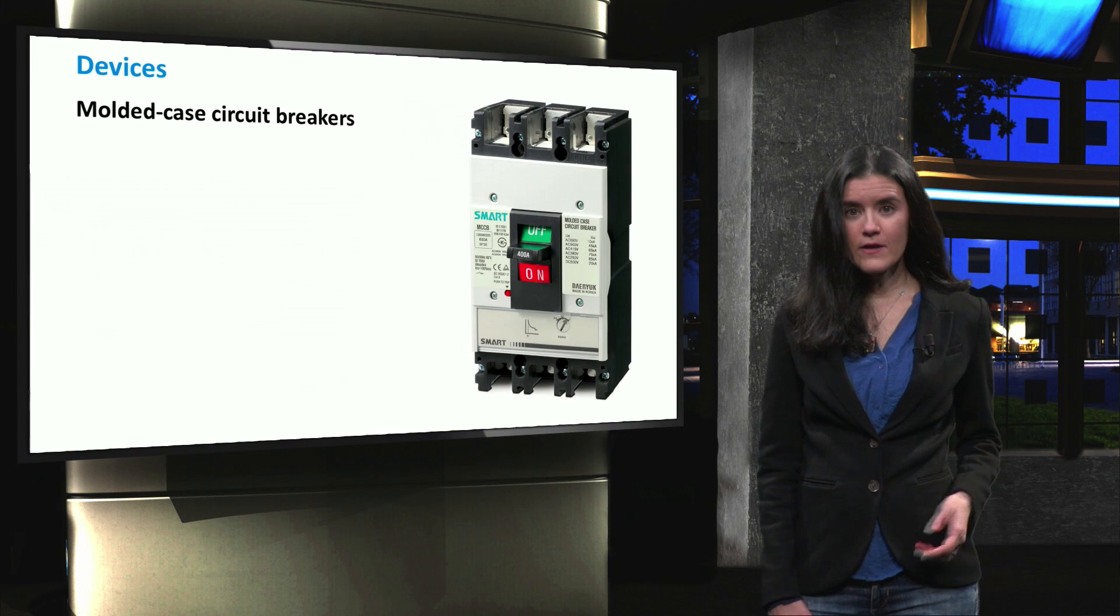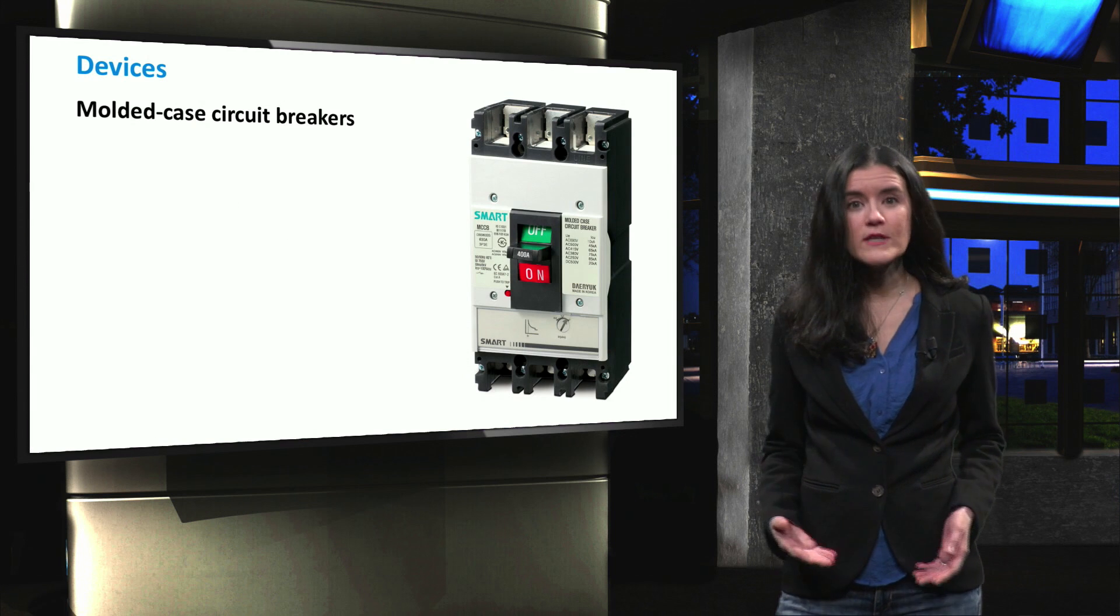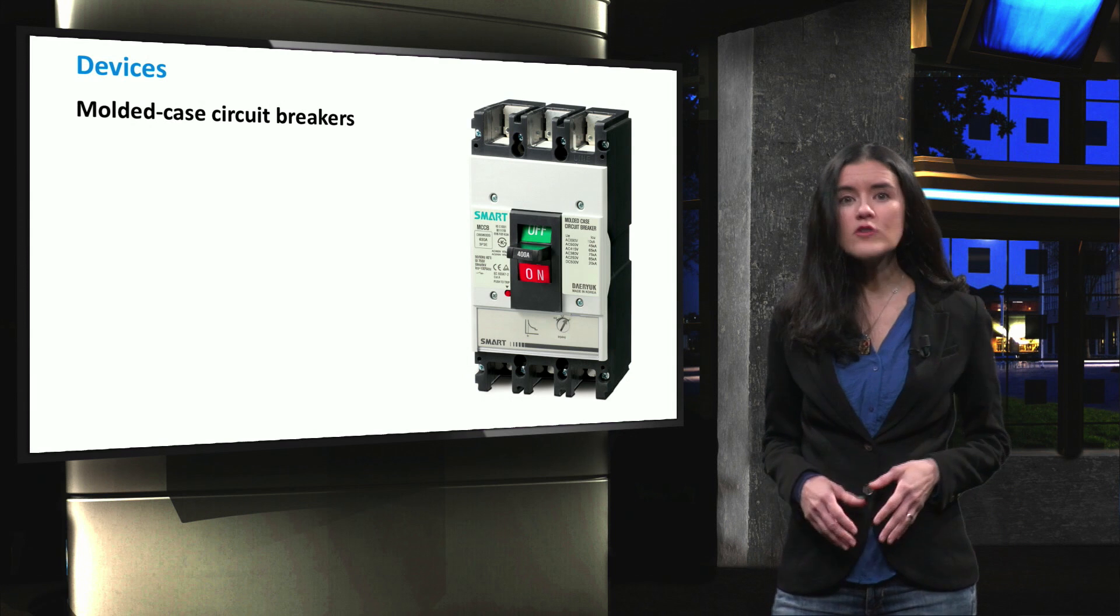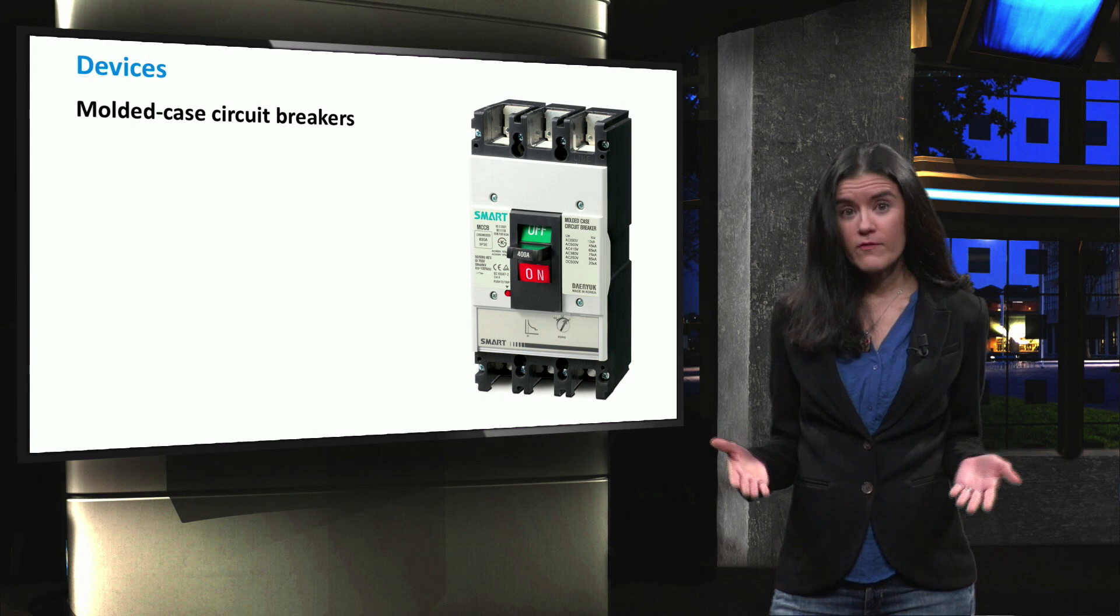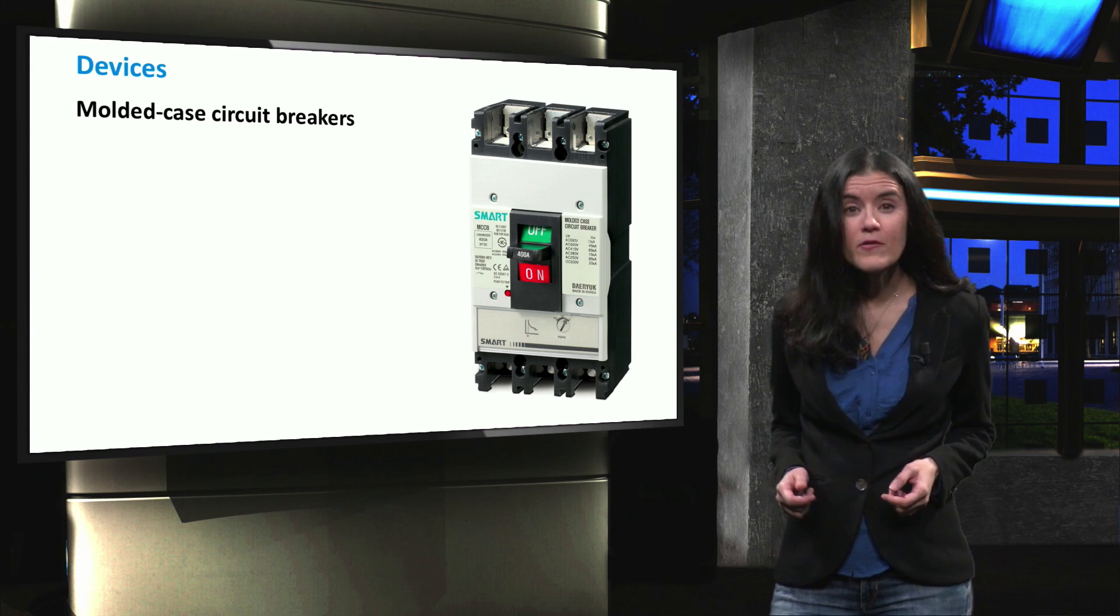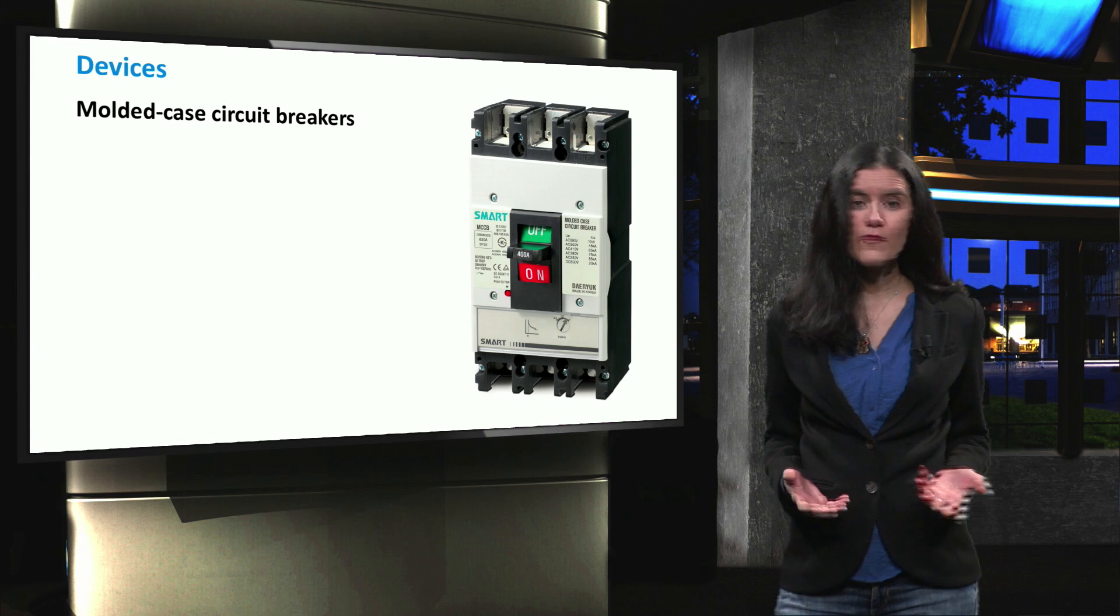A circuit breaker is an automatic electromechanical switch that protects the circuit from overcurrent. When a fault is observed in the circuit, the switch opens and the current flow gets interrupted. Unlike the fuse, the circuit breaker can be reset after it has been triggered for further operation. This can be done in a manual or in an automatic way.